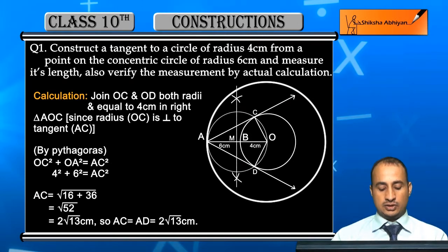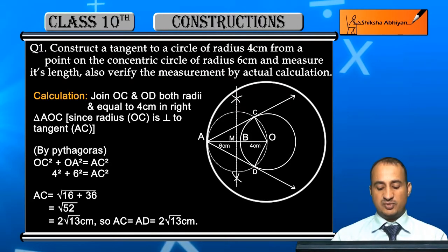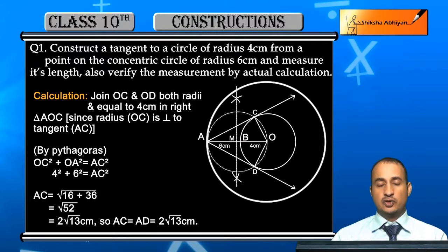In right triangle AOC mein dekhiye, AOC mein aap dekhenge kyun hai yeh right triangle, kyonki radius OC is perpendicular to tangent AC. Iske andar AC aapka kya kaam kar raha hai, AC aapka hypotenuse hai. Baki do side hai, so by Pythagoras theorem: